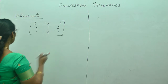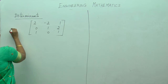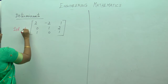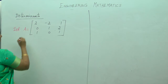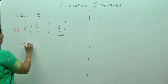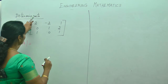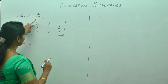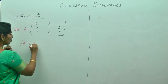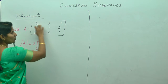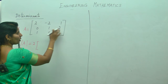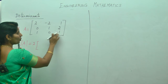Now, the determinants — suppose this is the given matrix, let A be the given matrix. To find the determinant of A, first you will take the first element, that is 2, into — leave the corresponding row and the column. What is left out? 1, 2, 0, 1.